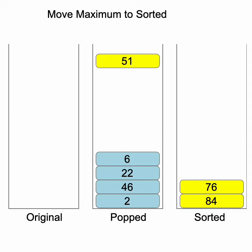When the original stack is empty, we start popping from the pop stack. If the popped element is the maximum value, then it is moved to the sorted stack. If not, then it moves back to the original stack.